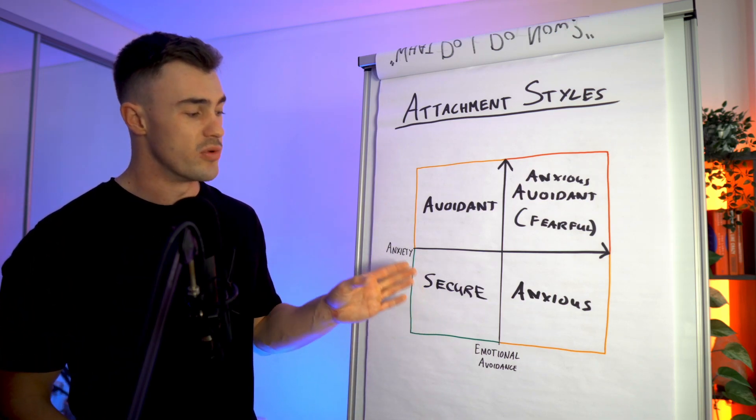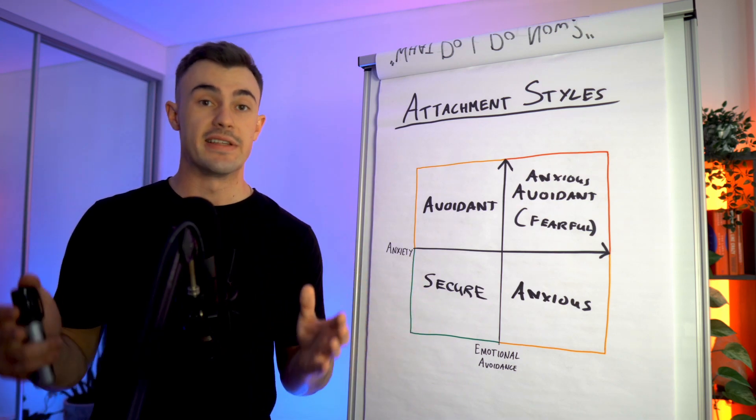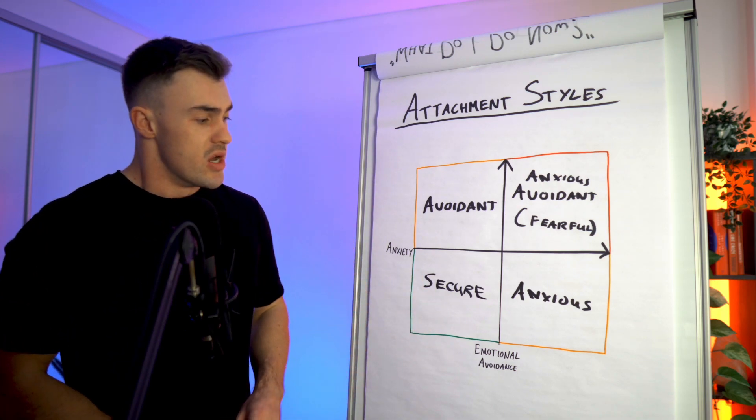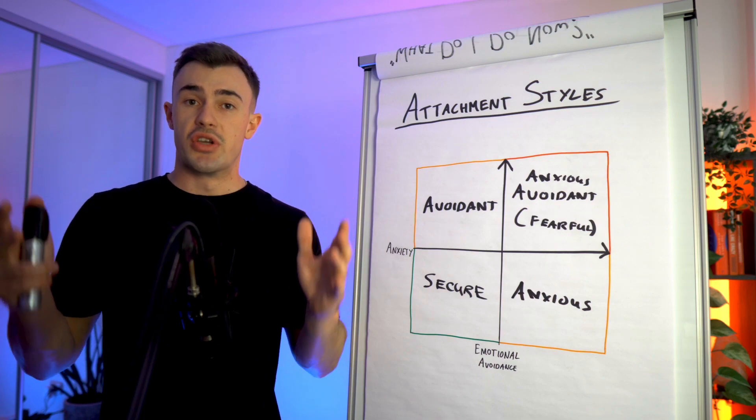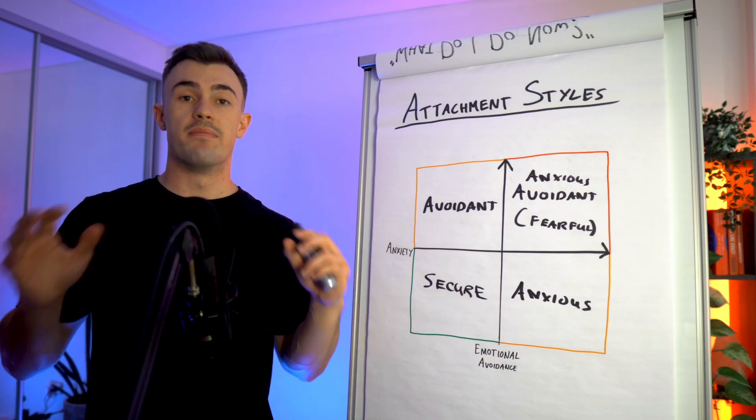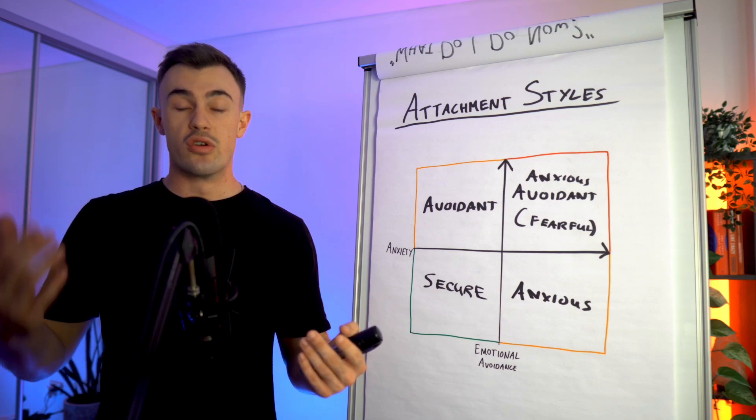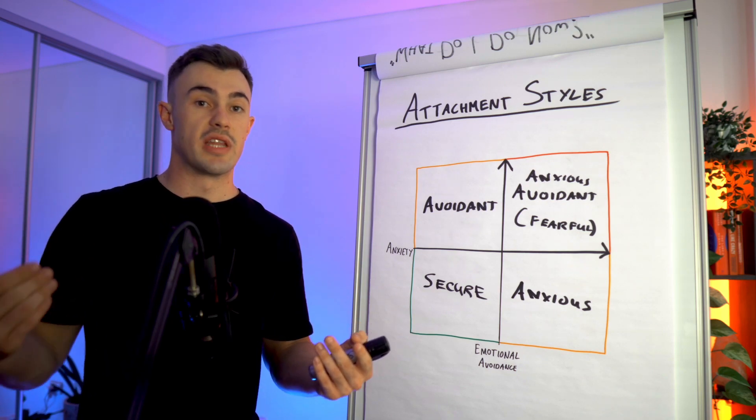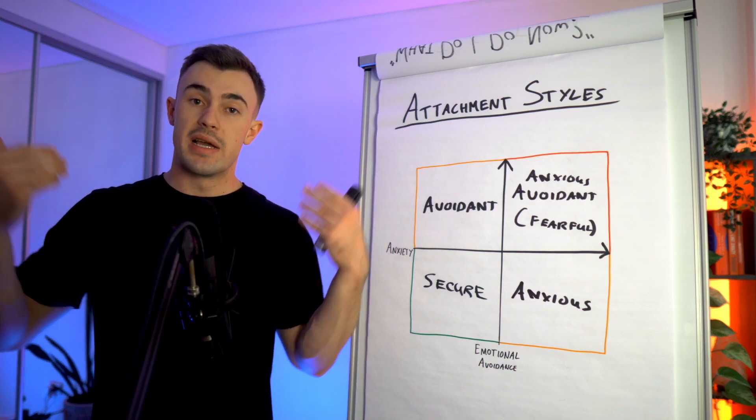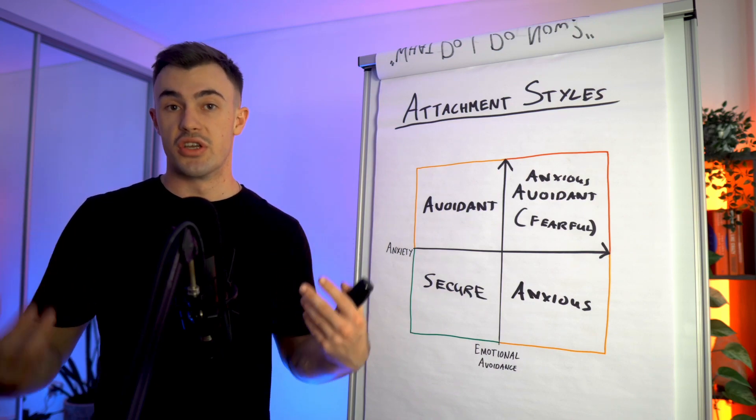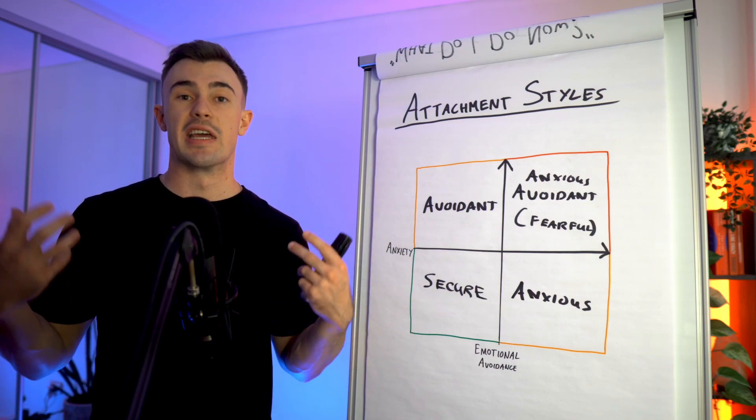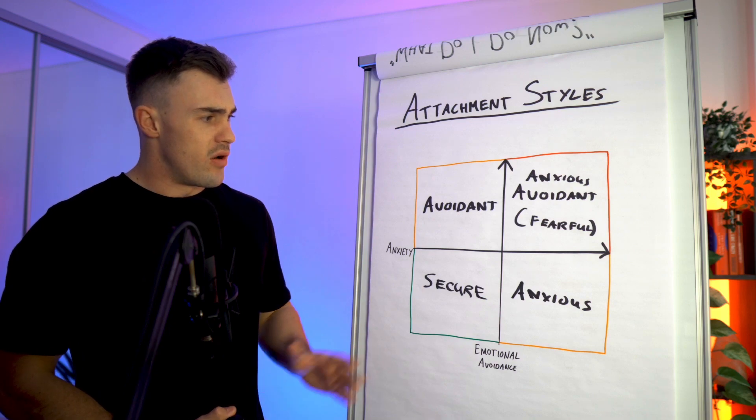And ultimately, these people were generally raised, the people who are innately secure attachment types, were generally raised in very secure environments where they were provided the benefits of all these different scenarios. They were given a good amount of freedom to go and pursue what they want, do what they want, but also be able to come home to love and security and affection and that connection that they desire.